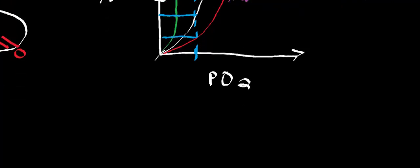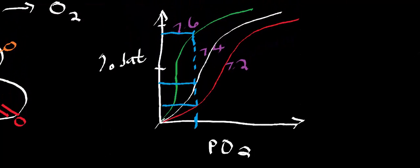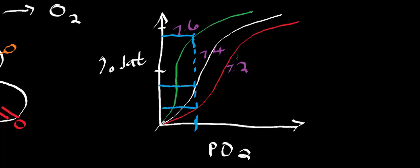Remember that picture from a previous video: we had an actively metabolizing cell that produced CO2 and H3O+ (hydronium). If we have lots of hydronium, we're signaling a metabolically active cell that needs more oxygen. When we need more oxygen, hemoglobin needs to dissociate the oxygen — it has to move into the T state. So if we have a lot of H3O+, the pH drops.